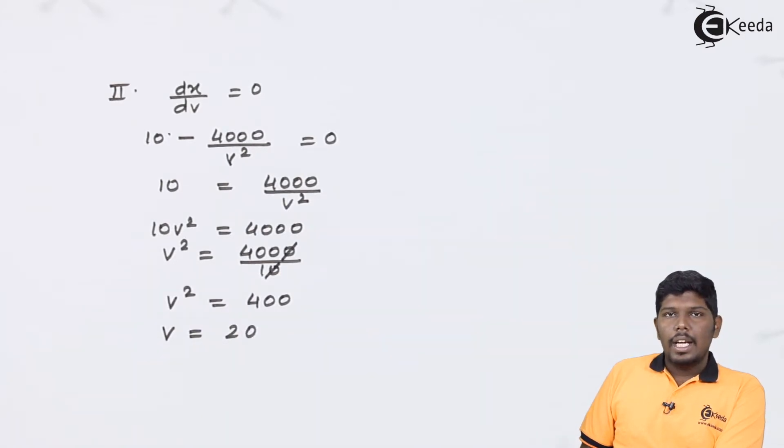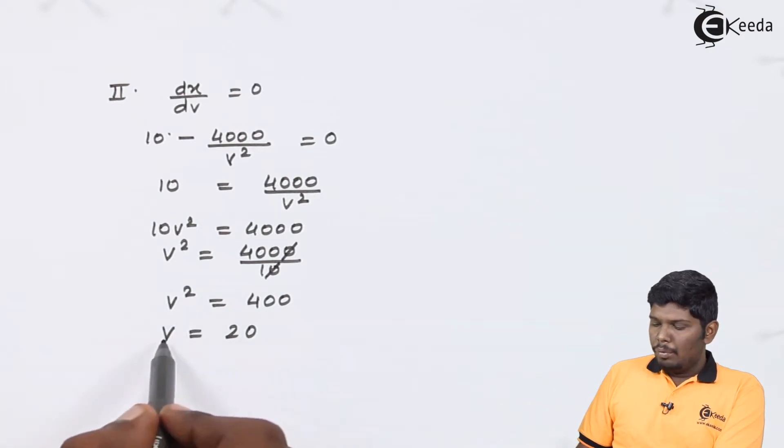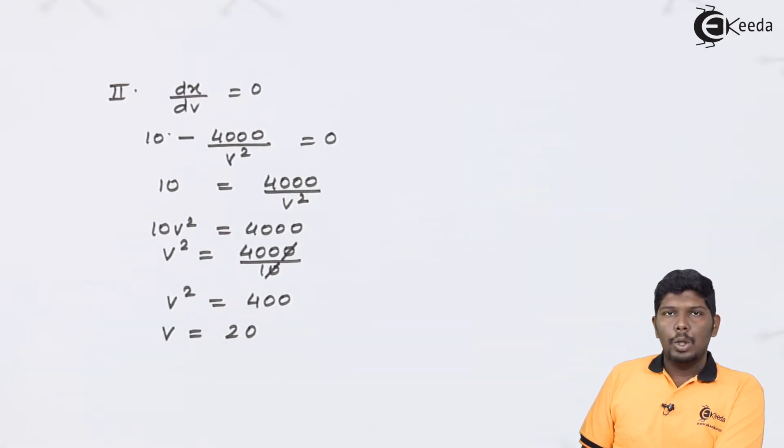Now in this case, I am not assuming the negative square root. Since V is the speed of the engine and that cannot be negative, we are going to consider only the positive square root.